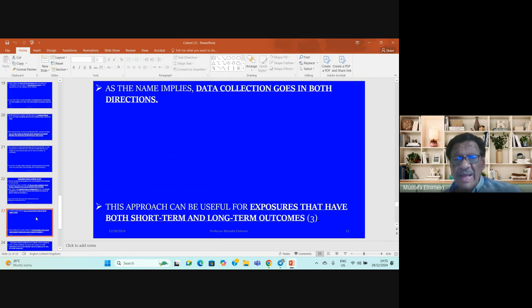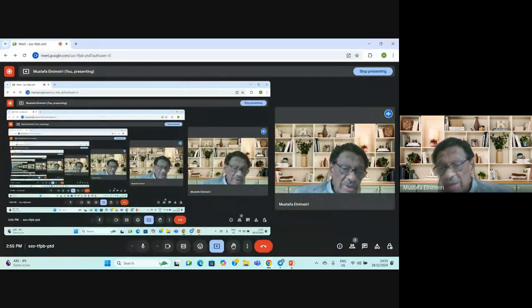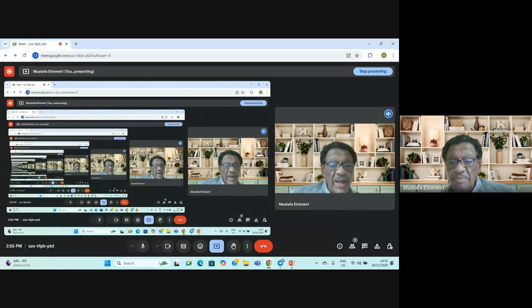Ambidirectional study, as the name implies, means the collection goes in both directions, retrospective and prospective. This approach can be useful for exposures that have both short-term and long-term outcomes, allowing detection of exposure extent in both directions.